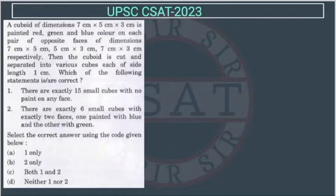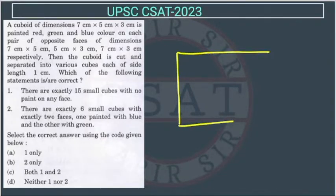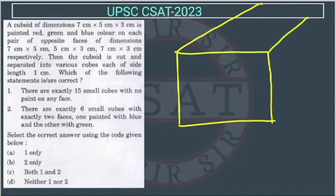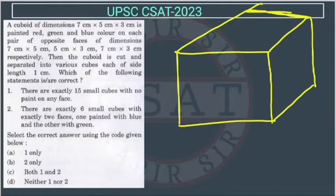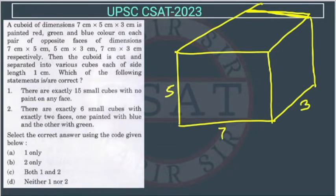So let's draw a cuboid first so we can see better. So suppose like this — this side is 7, this is 5, and this is 3.